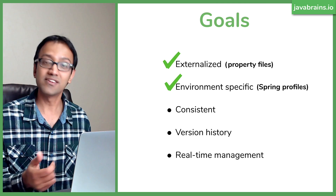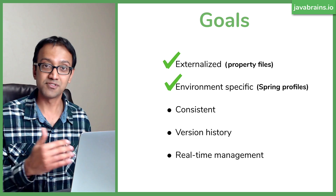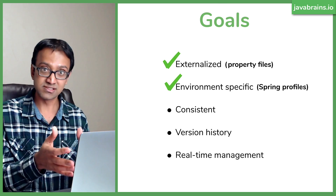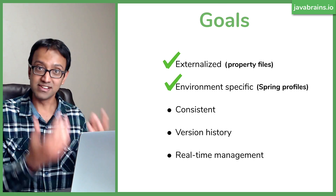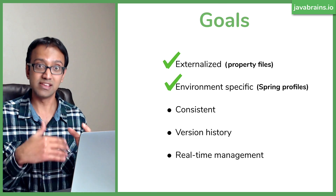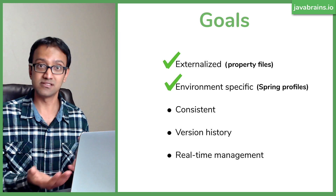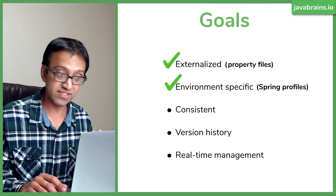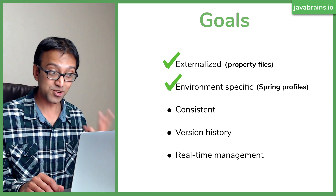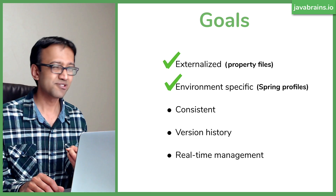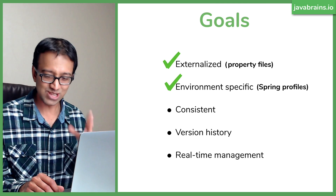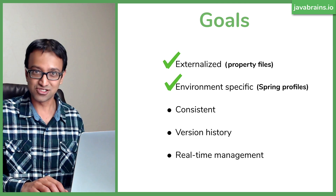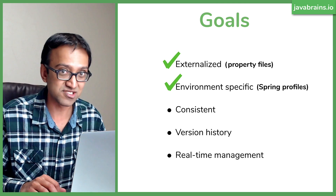And you definitely don't have real-time management. To make changes you'd have to either push a new build, go to the instance and restart the server, pass a command line argument, or use an external property file — and restart that microservice instance. So we've achieved two of the five goals. Not bad so far, but let's dig deeper and see how we can achieve the rest. That's the topic of this tutorial.